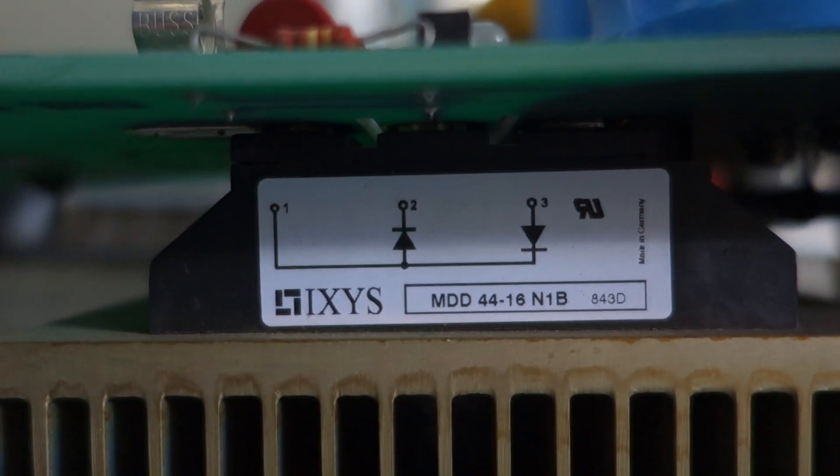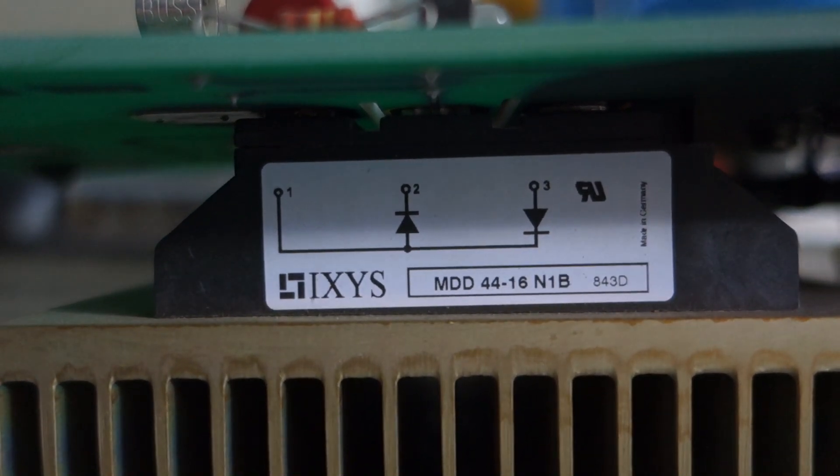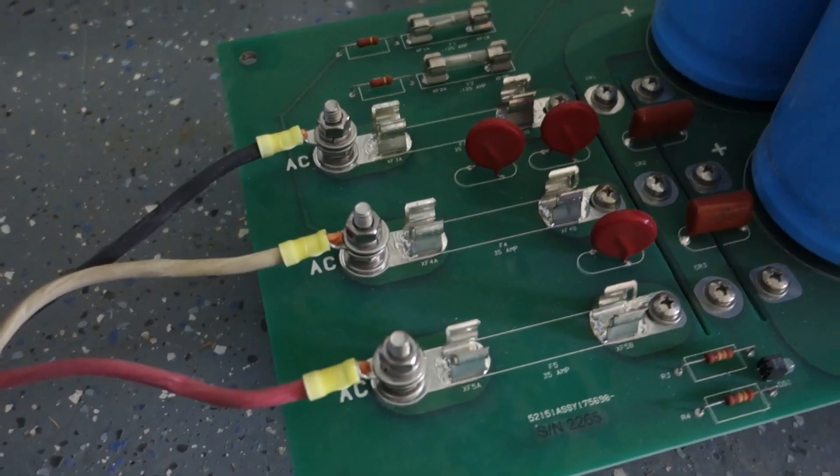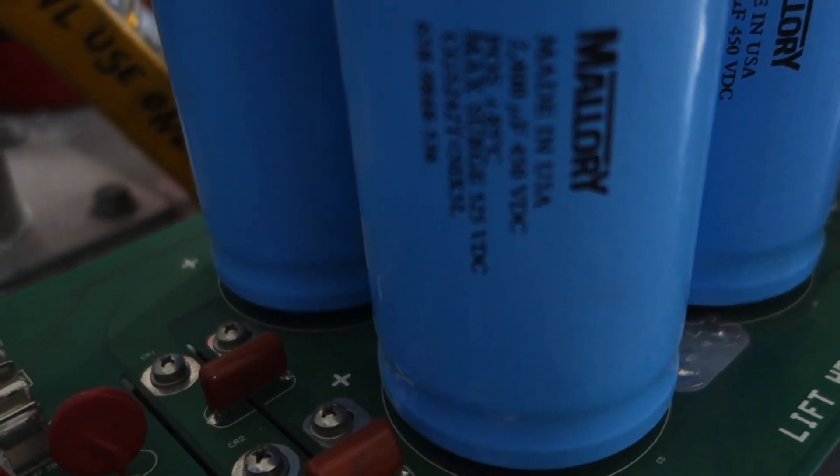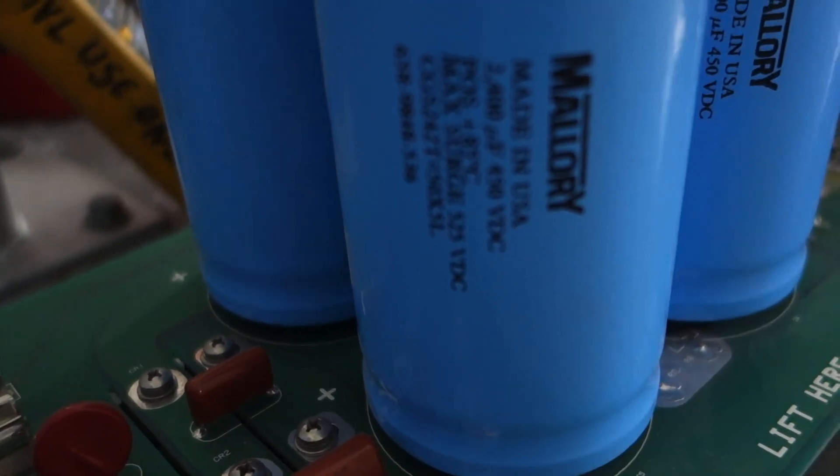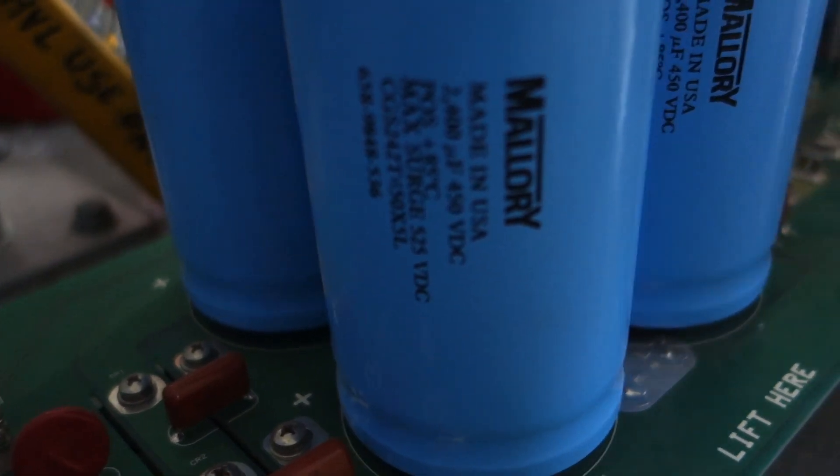So that takes 480 three-phase and turns it into nice filtered DC. We know it's filtered because there's the filter caps, big ones. Those are thumper caps. Well, close—those are 2400 microfarad at 450 volts, and they're an inferior brand.